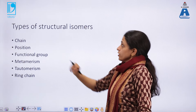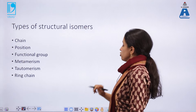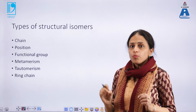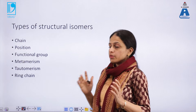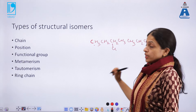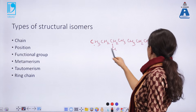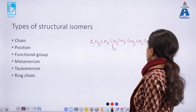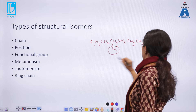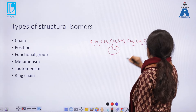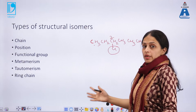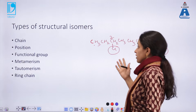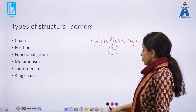The second category of structural isomers is position isomers, which differ in the presence of the functional group or atom with respect to its position on the carbon chain. Here you can see two structures: 2-chlorobutane and 1-chlorobutane. They have the same molecular formula, but differ in the position of the chlorine atom — here it is at position one and here at position two — making them altogether different molecules.